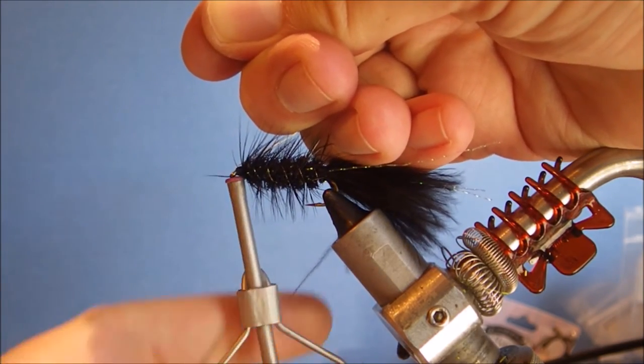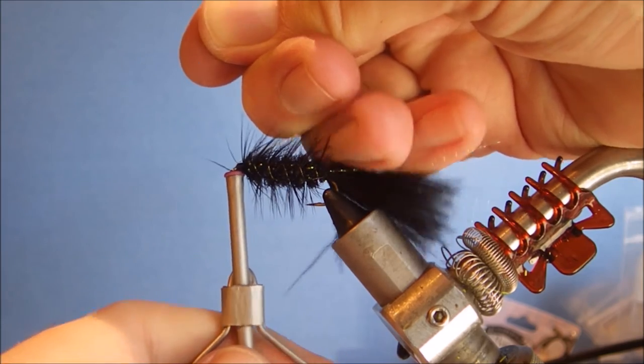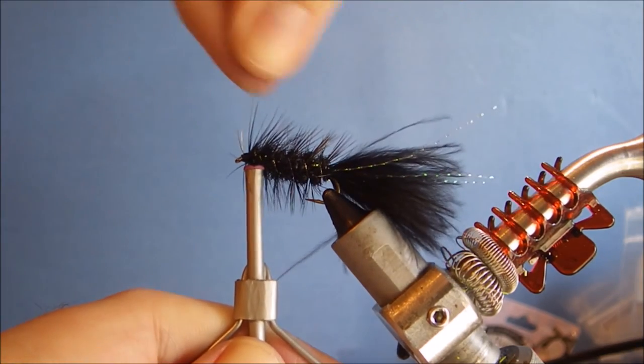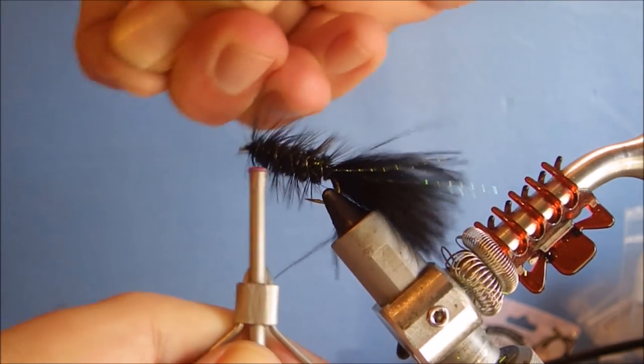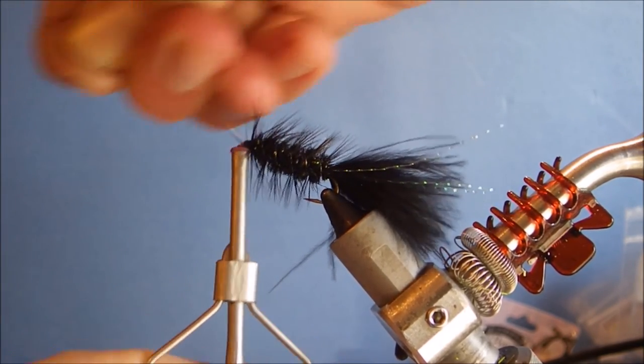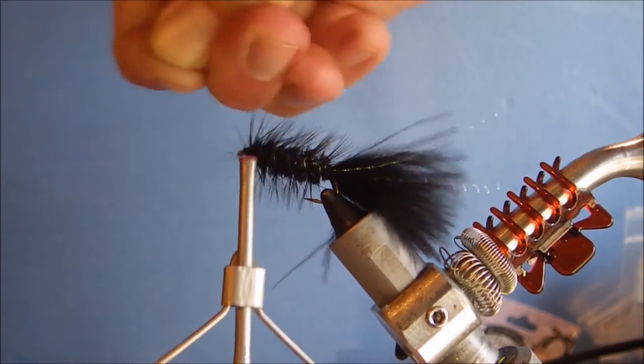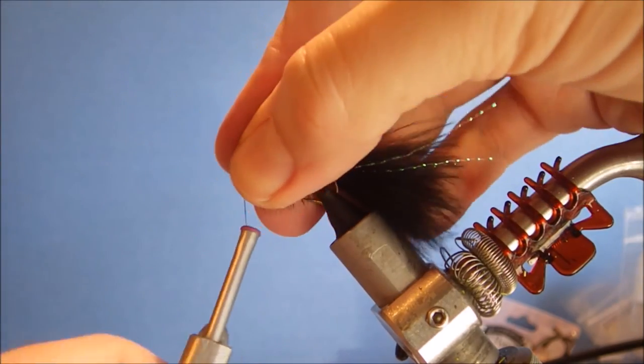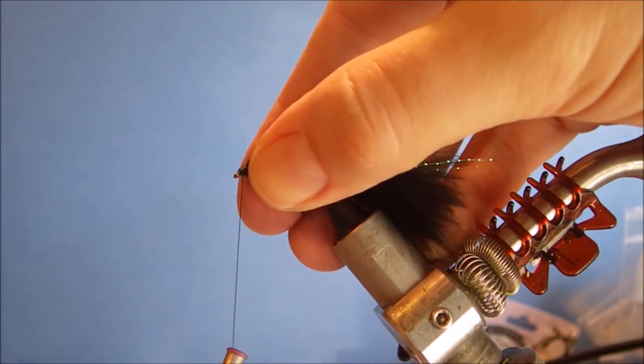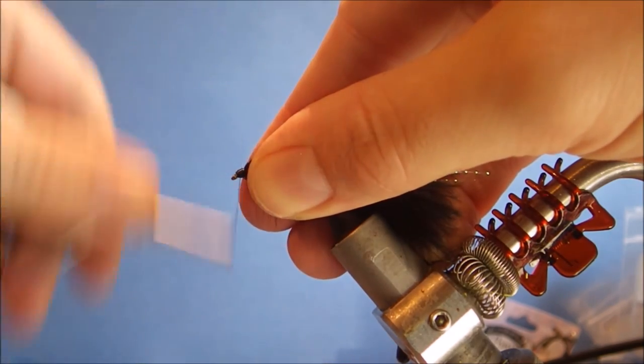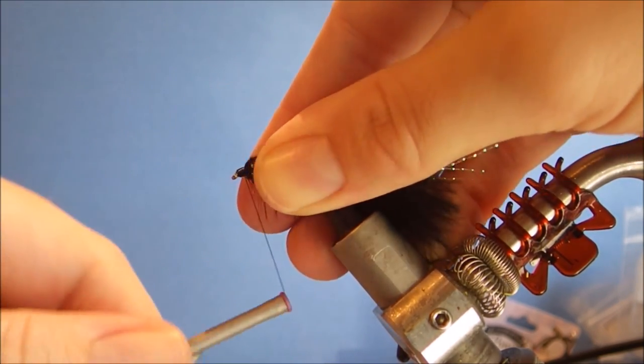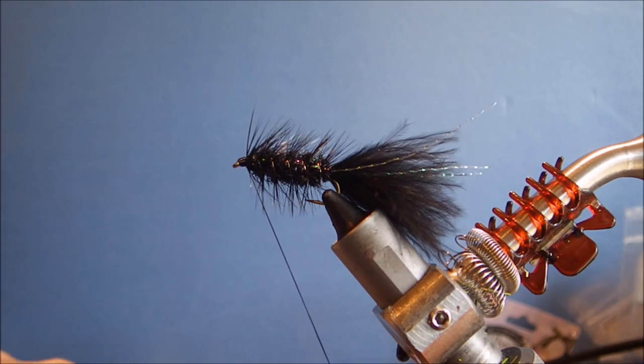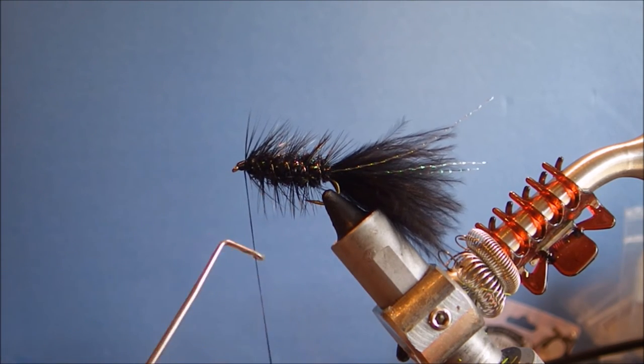Wire, don't cut it, just put your bobbin holder against the hook to stabilize it and then just bend and break it. Then just draw anything going forward back, take two or three turns, just build your neat head and then when you're happy, you can come in with your whip finish tool.